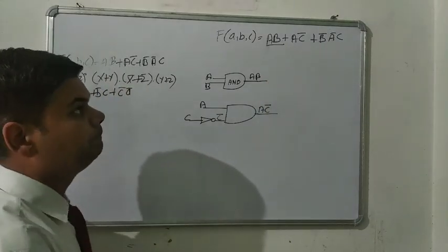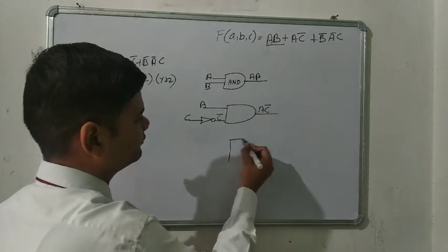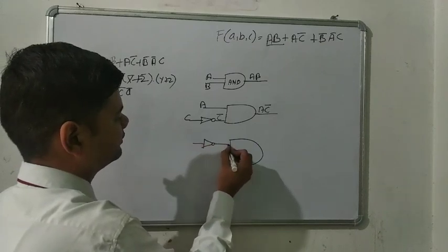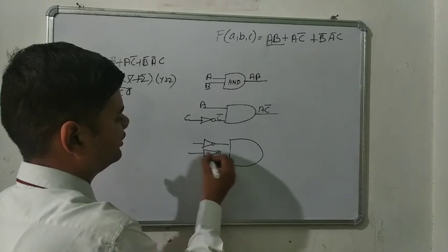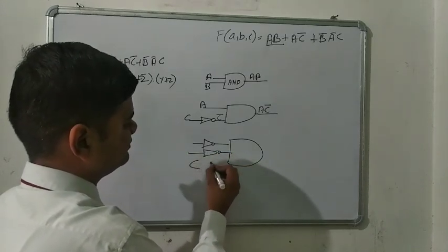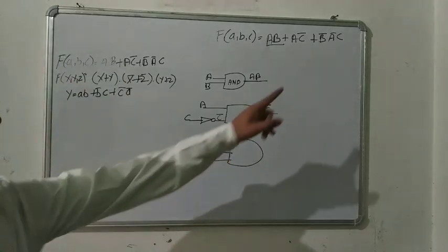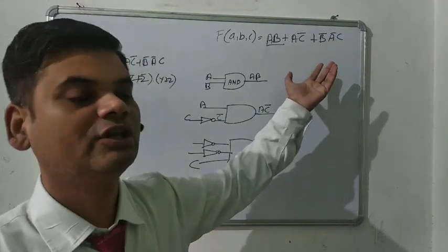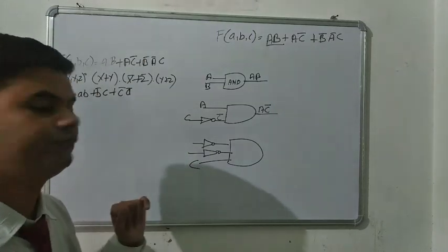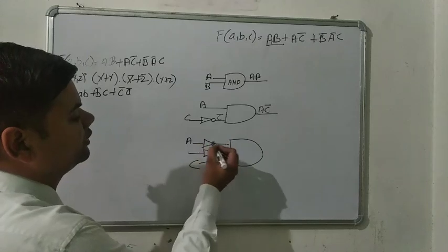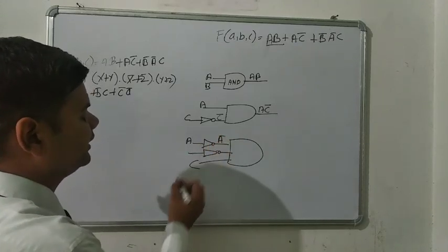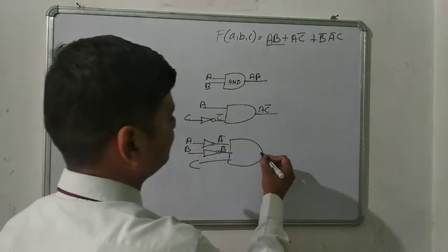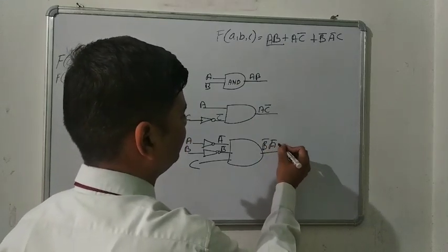Now the next term is B̄ĀC. For that again we have to draw the AND gate. We are using one NOT gate for B and a second NOT gate for A, and C is direct. In the third term we have three variables B̄, Ā, C. B is barred and A is barred, so for A and B we use the NOT gate, and C is simple. The first NOT gate takes A and outputs Ā. The second NOT gate takes B and outputs B̄, with C directly.